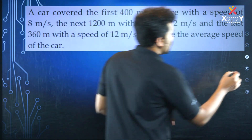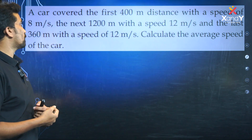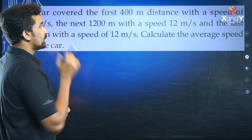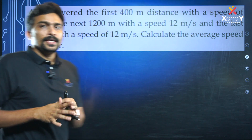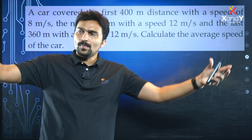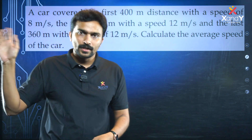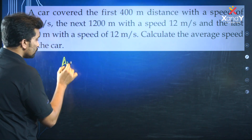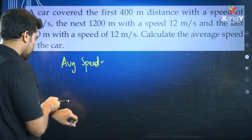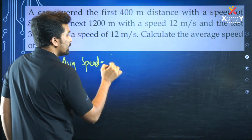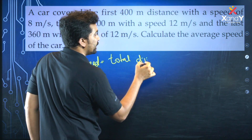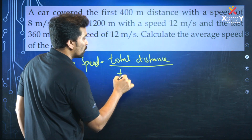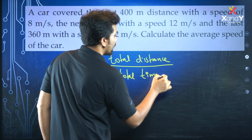Next question: A car covered the first 400 meters with a speed of 8 meters per second, the next 1200 meters with a speed of 12 meters per second, and the last 360 meters with a speed of 12 meters per second. Calculate the average speed of the car. Average speed equals total distance divided by total time.